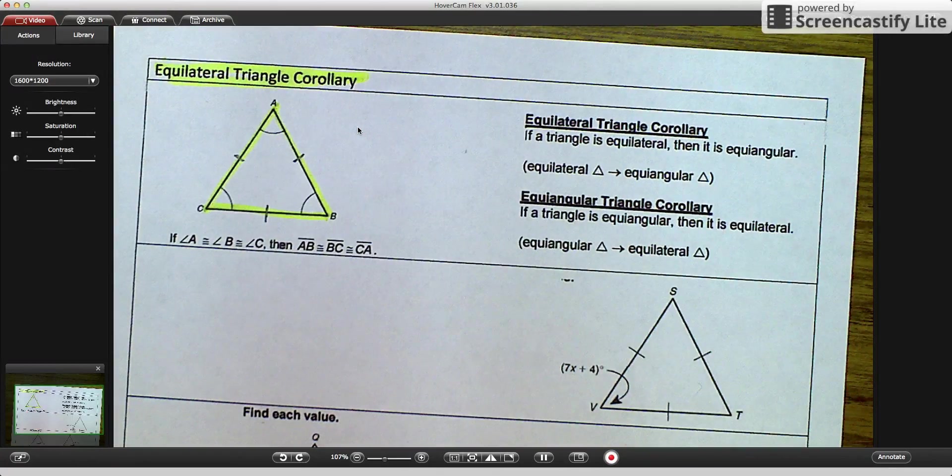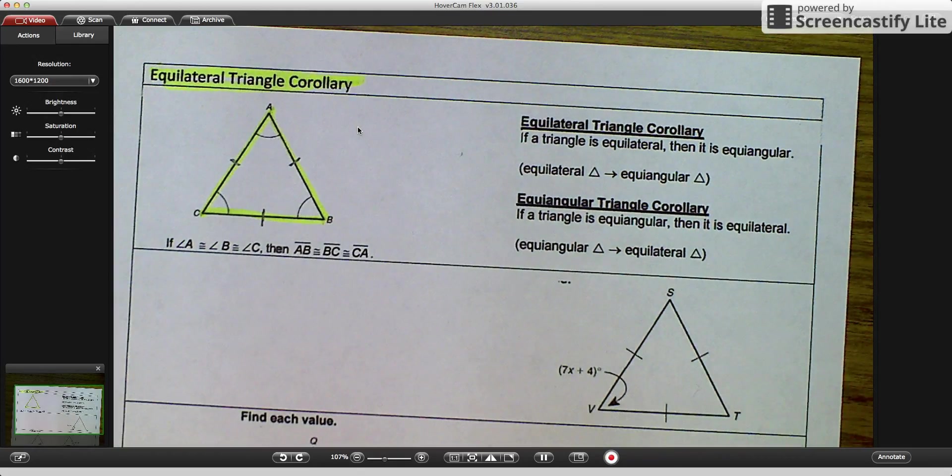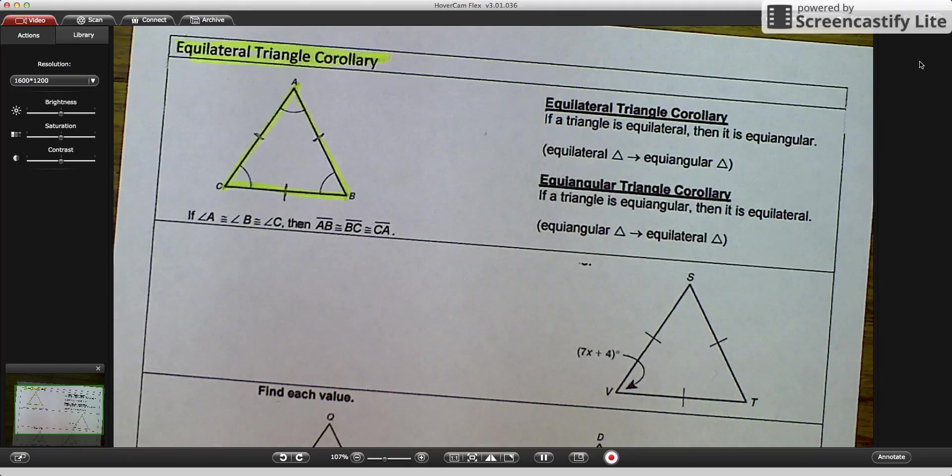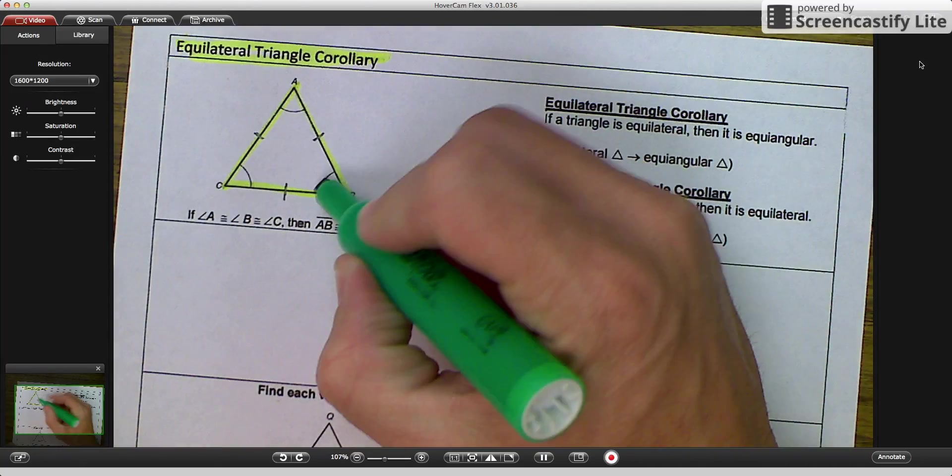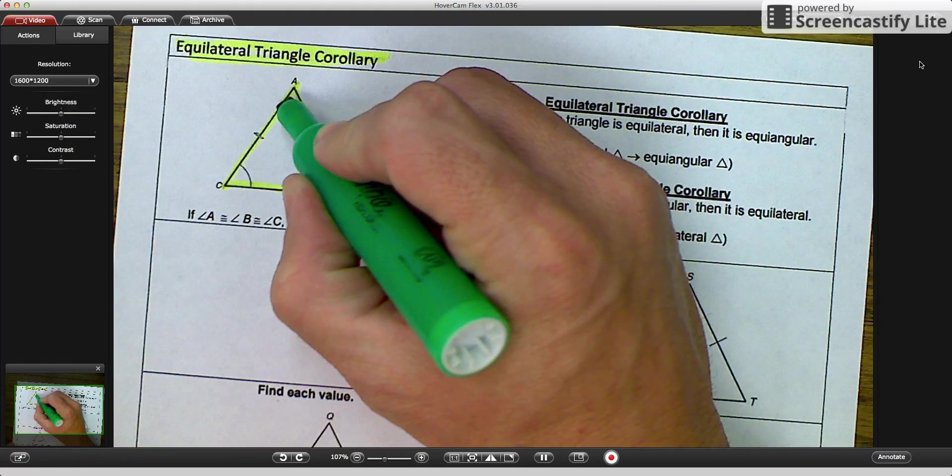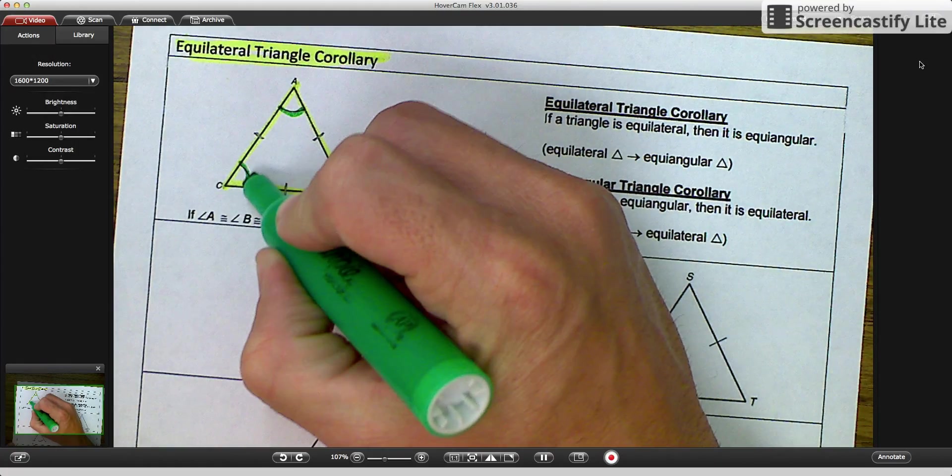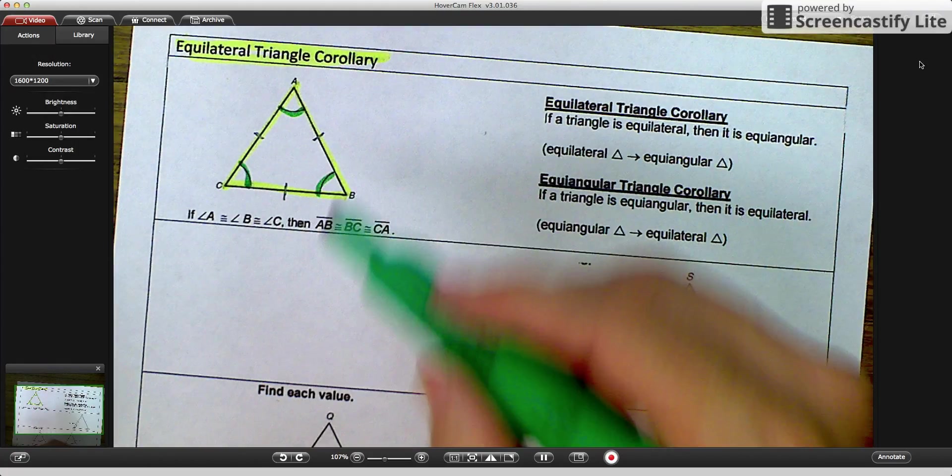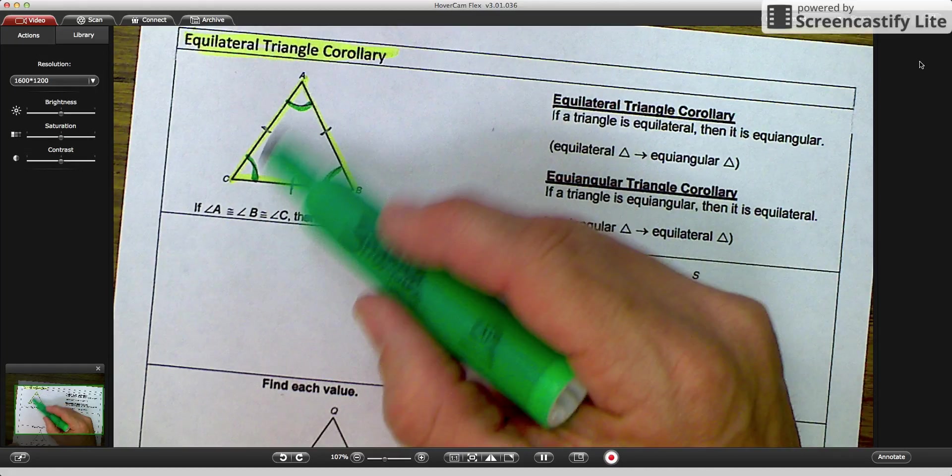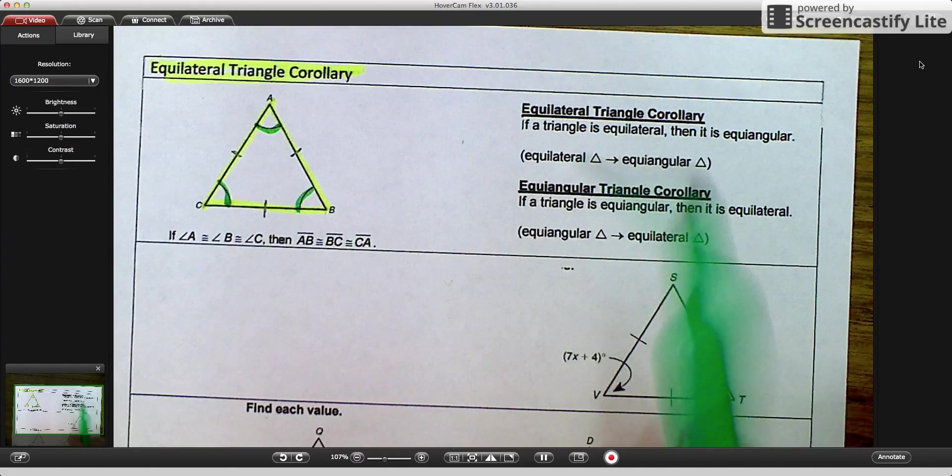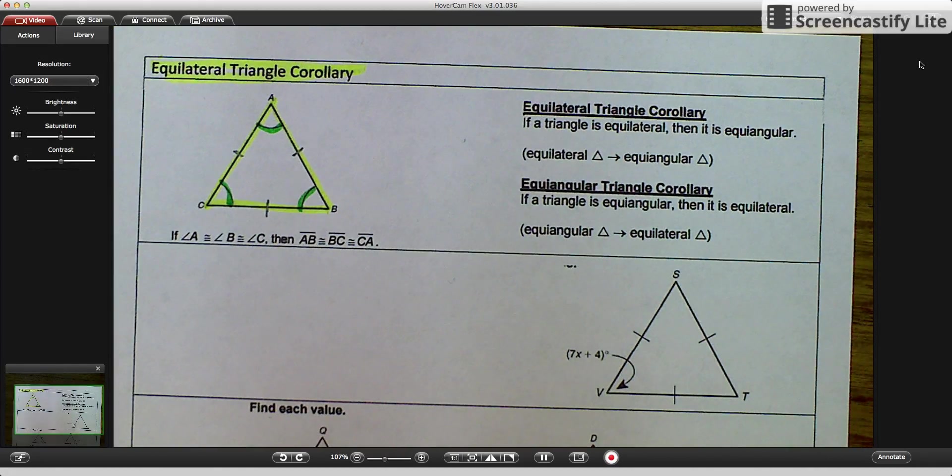So if you ever see that, you know that it is an equilateral triangle, where the sides are congruent. The other thing you can see is that they are all equal angles. Equal angle, equal angle, equal angle. So as soon as you see all three angles are congruent, or all three sides are congruent, this corollary holds true.